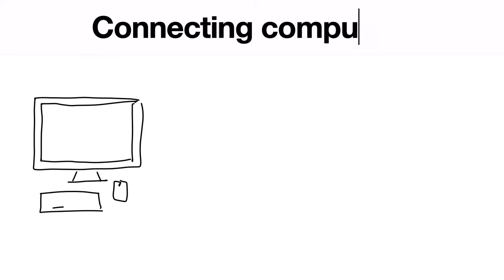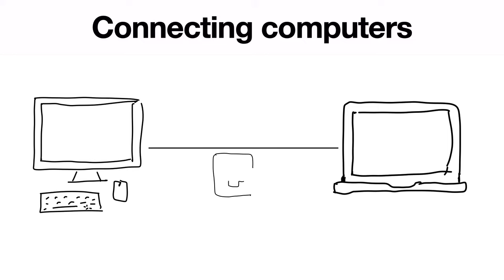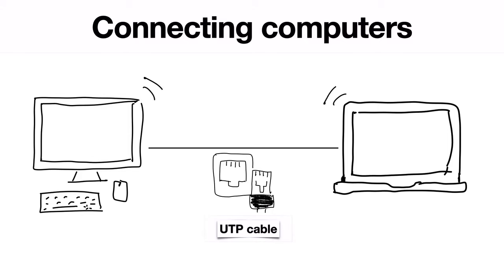Two heads are better than one. That's true for humans, but also for computers. If we want to connect two computers to each other, we can use a network cable, such as the UTP cable — the unshielded twisted pair. Or we can do it using wireless, through Wi-Fi technology.